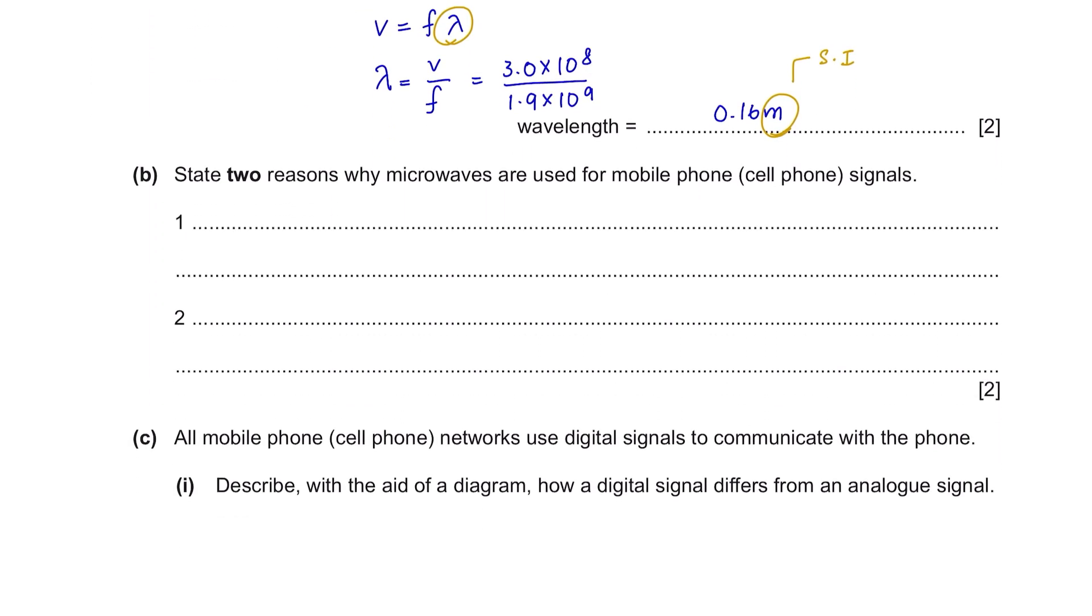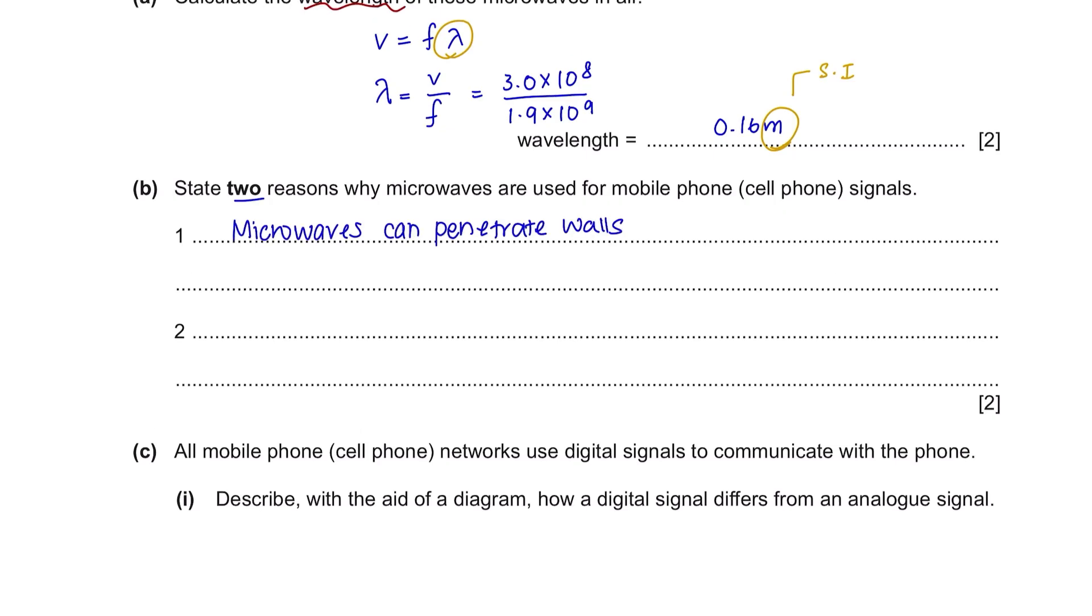Question B. State two reasons why microwaves are used for mobile phone signals. You have another question here that you should remember or memorize their uses and functions. Two reasons are: microwaves have the ability to penetrate buildings and obstacles more effectively compared to higher frequency signals like visible light. And second, microwaves have a relatively high frequency which allows them to carry a large amount of information in a short amount of time.